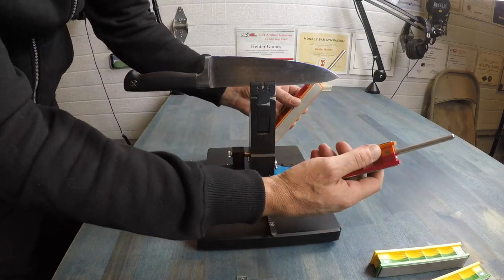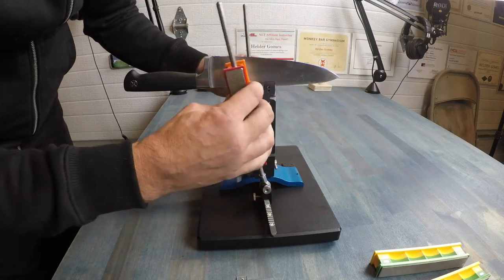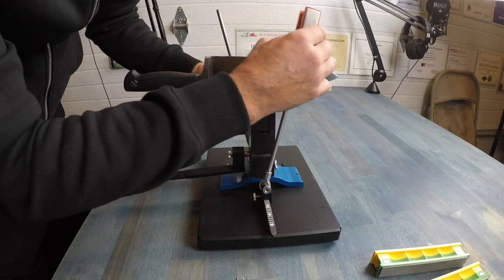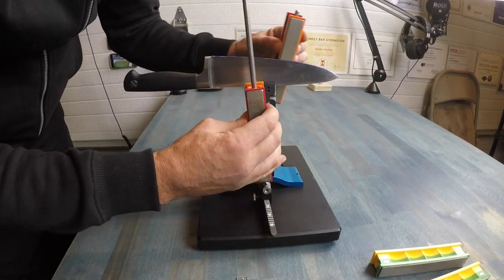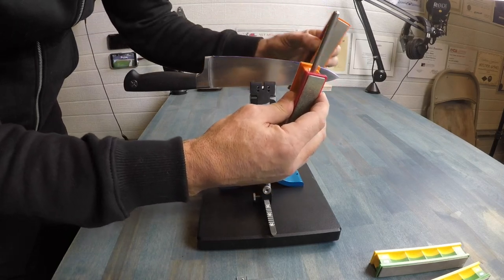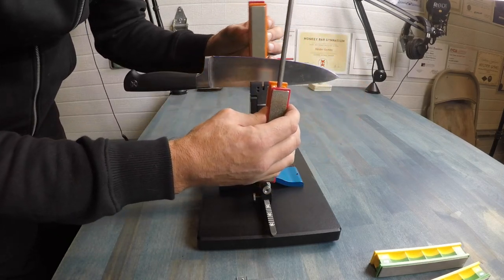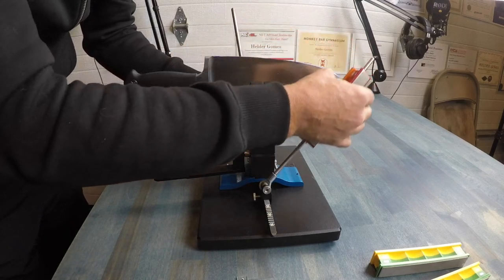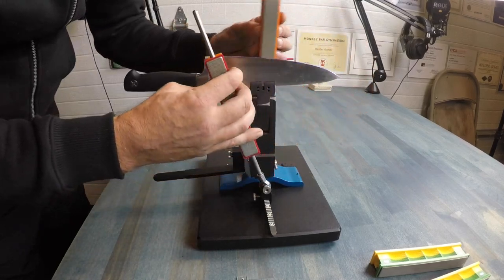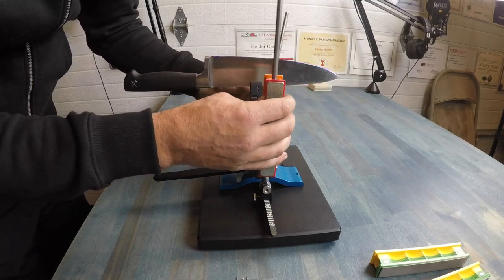So basically we are here as I stated, I want to start with the 200, we got our angle set and all I'm thinking about here is going in this forward motion. Forward motion, you can tell that's a little rough here because of course it is 200 grit, so it's actually taking a little bit of that metal off and basically I'm just going to keep going with these forward strokes.